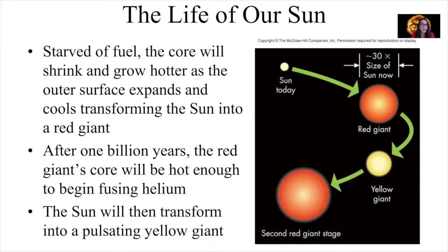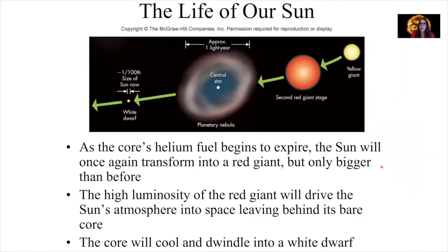And then after one billion years of being a red giant, the red giant's core will be hot enough to begin fusing helium. And then the sun will transform into a pulsating yellow giant. By pulsating, it means that its size and its outer layers are going to be kind of, they'll look like they're kind of breathing, kind of growing in and out, in and out. And then as the core's helium fuel begins to expire, so hydrogen is our first element on the periodic table. We fuse hydrogen into helium. After we've run out of all that hydrogen, we start fusing helium into other things. In particular, we're fusing helium into carbon in the sun's core when it's in its red giant phase. Then as the core's helium fuel begins to expire, the sun will once again transform into this red giant, but only bigger than it was before as it exited this sort of pulsating state.